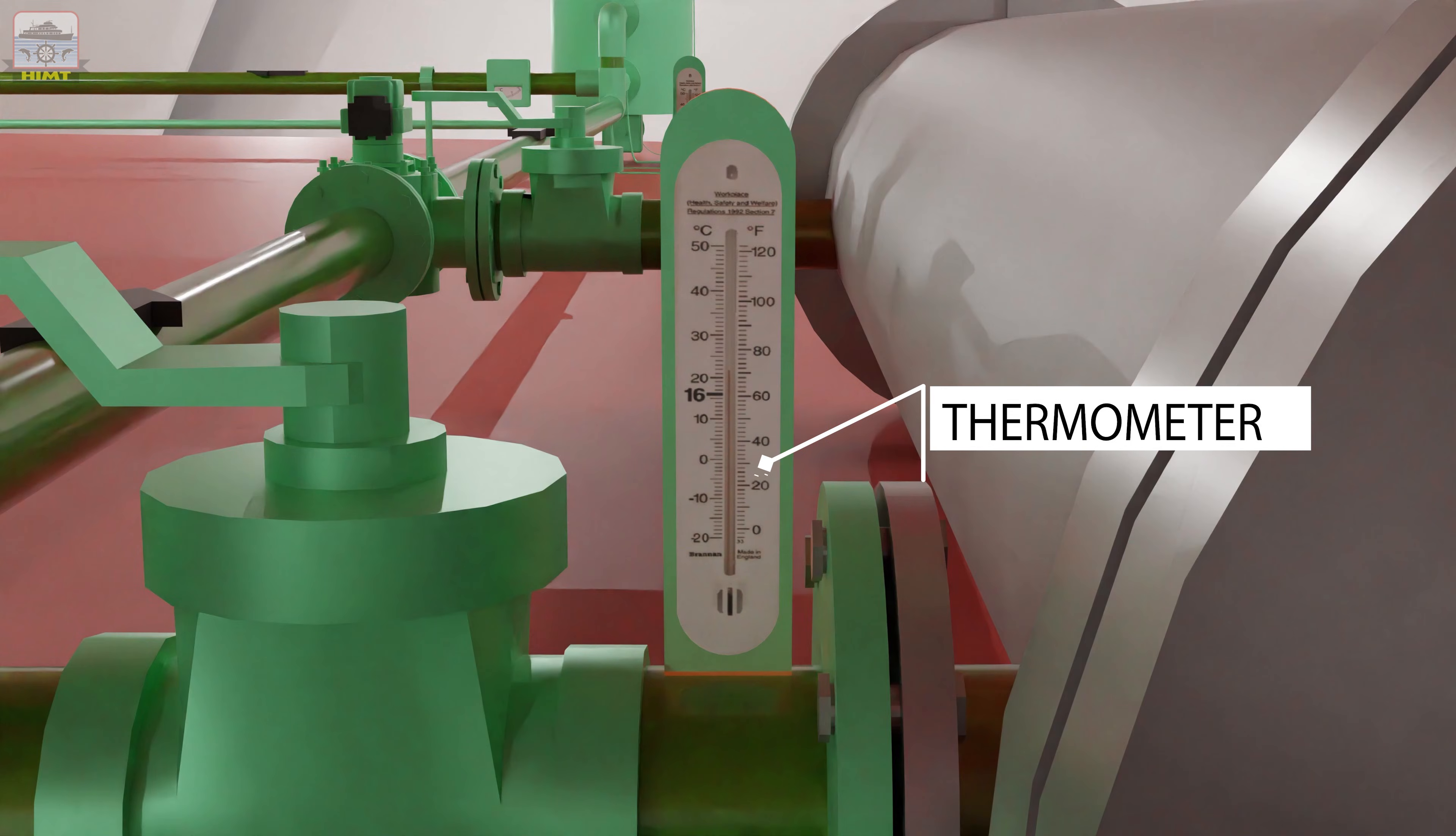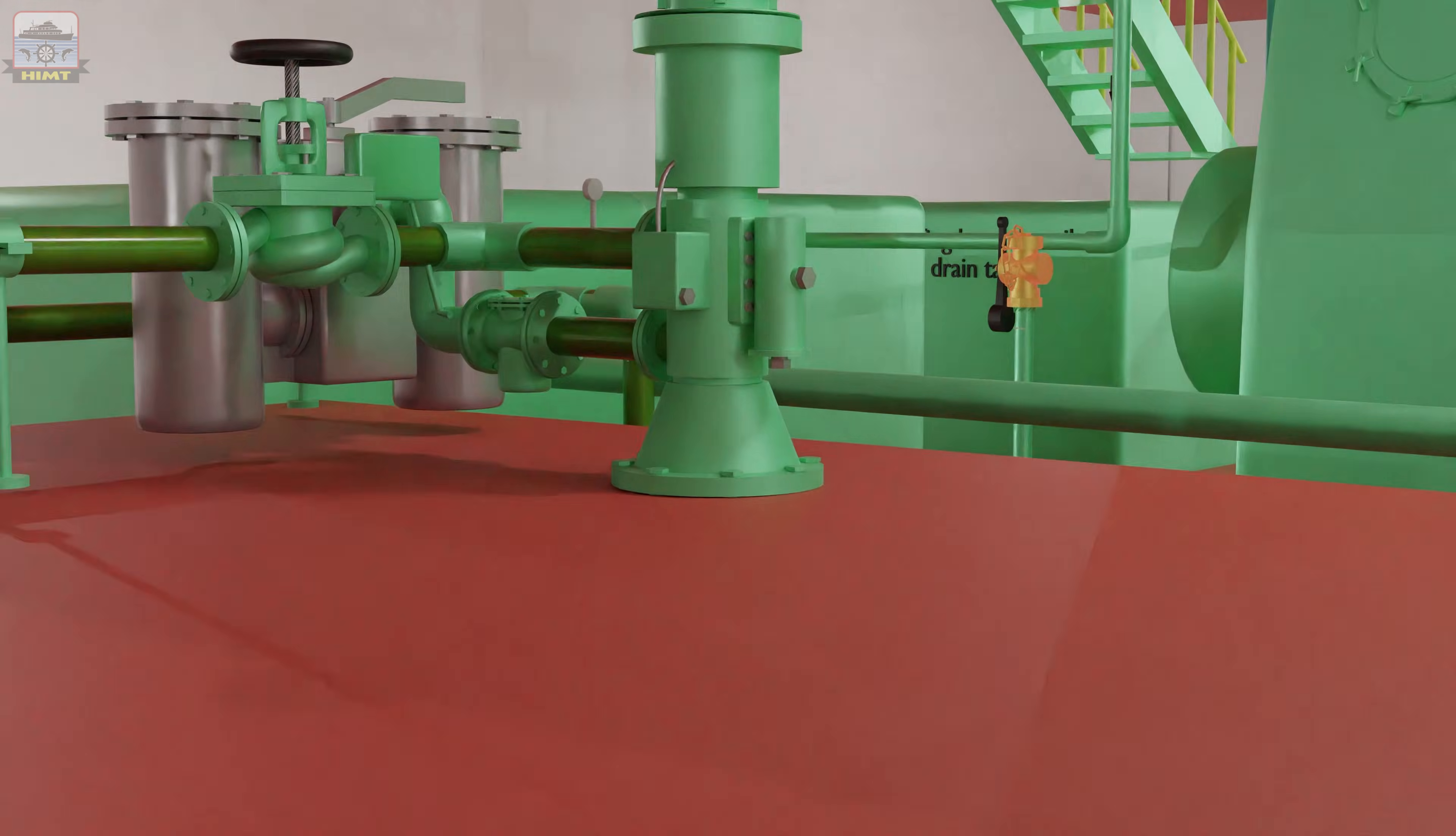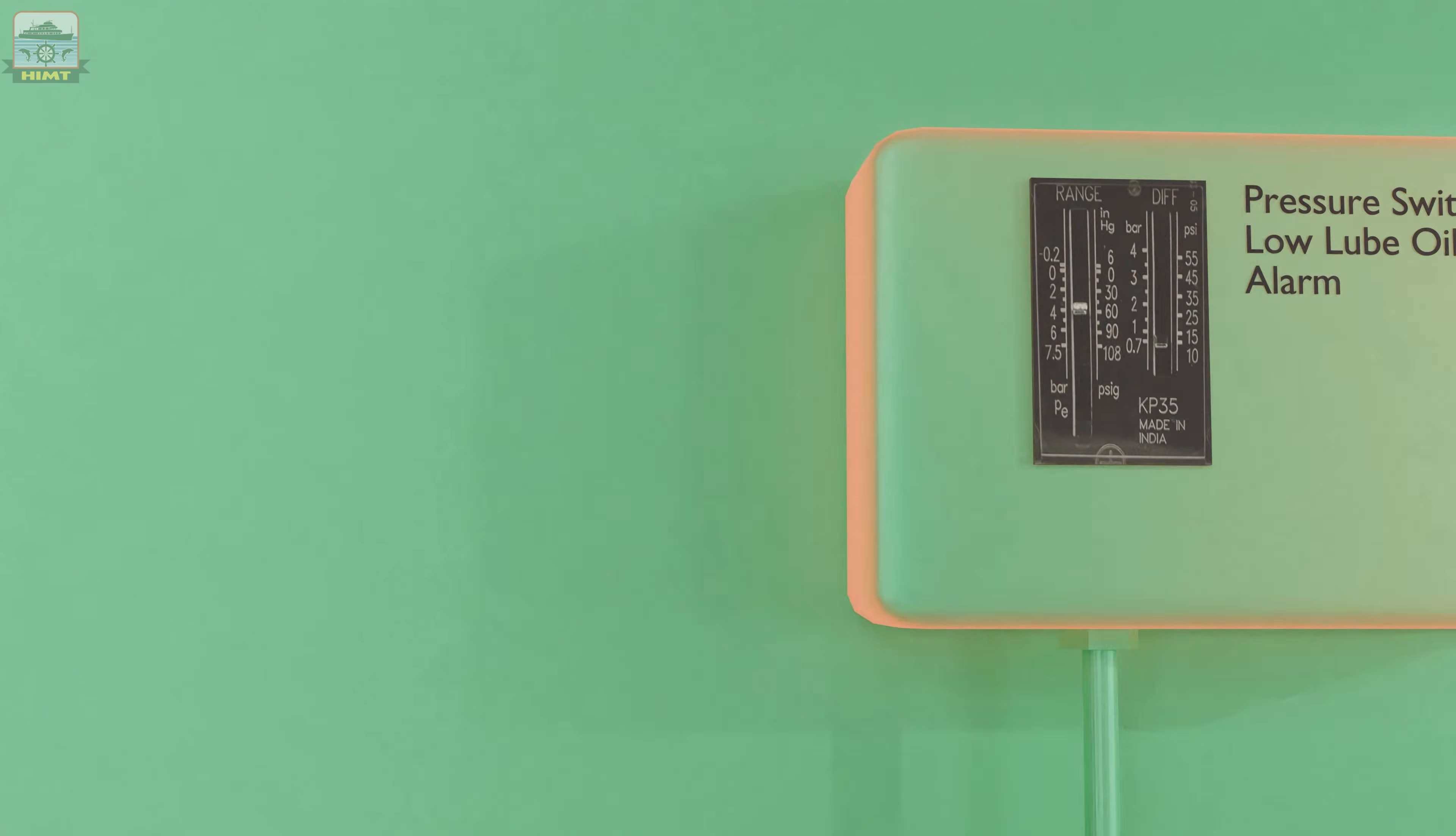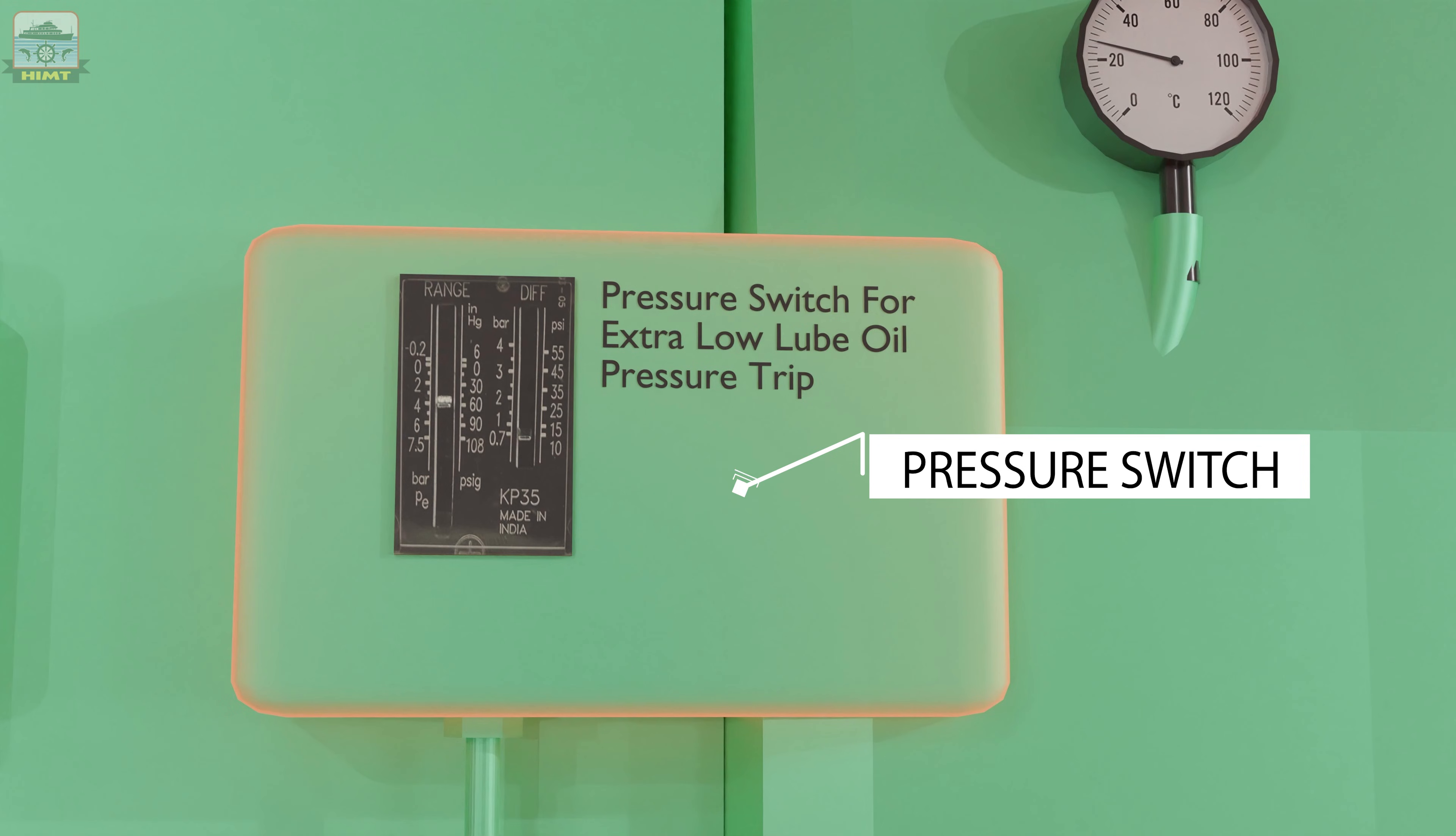A thermometer at the oil inlet to the cooler, a thermometer at the oil outlet from the cooler, a thermometer at the lube oil inlet manifold, a pressure gauge at the manifold, a pressure switch to give system lube oil low pressure alarm, and a pressure switch to shut down the engine at extra low lube oil pressure.